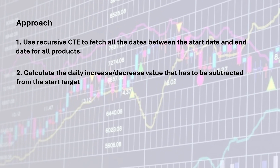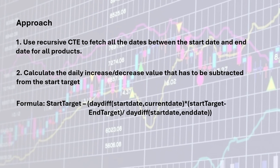Next, calculate the daily increment or decrement to subtract from the start target. The formula is: start_target minus (date difference between start_date and current_date) multiplied by (start_target minus end_target), divided by (date difference between start_date and end_date). For example, start target is 100, end target is 10, so 100 minus 10 is 90. The date range from Jan 1st to Jan 10th is 9 days.